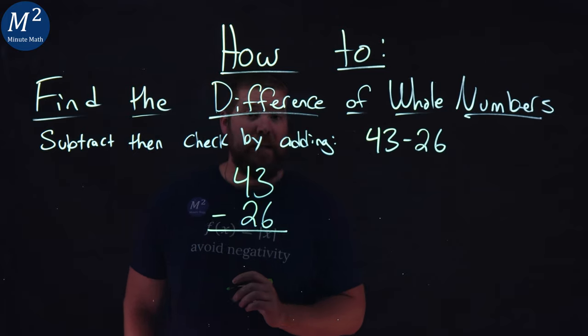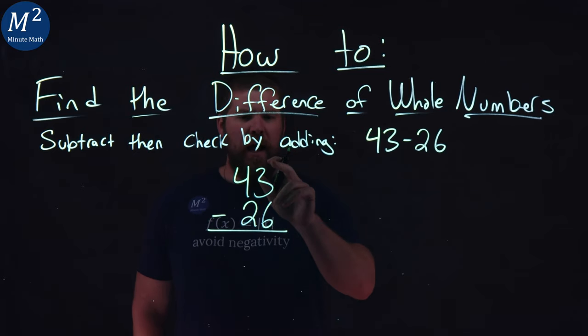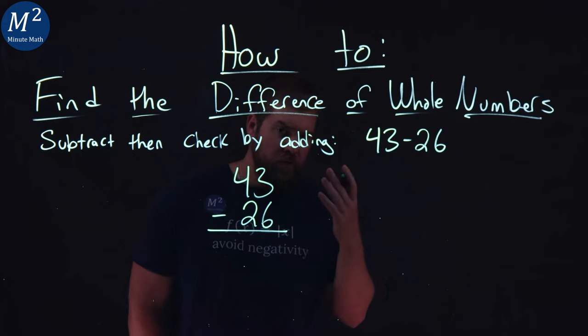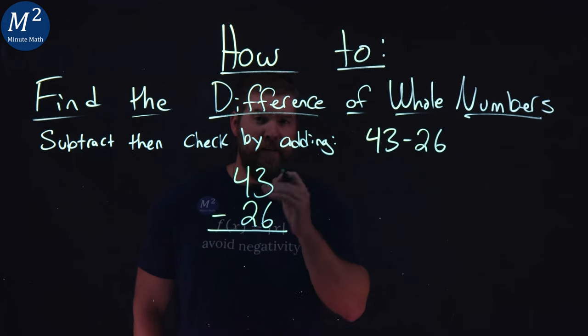Now we're going to subtract the two. I have 3 minus 6. Uh-oh, 3 is larger than 6. This provides a difficulty for me.